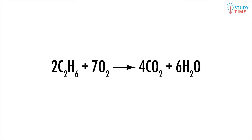Alkanes can also undergo combustion, which you know as burning. This doesn't produce any organic products — only water and carbon dioxide. Using ethane as an example: 2C₂H₆ + 7O₂ → 4CO₂ + 6H₂O.